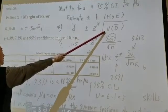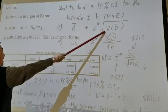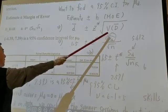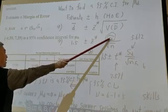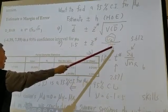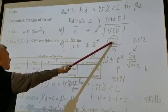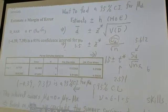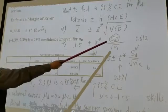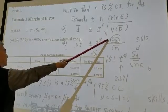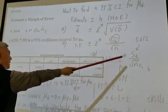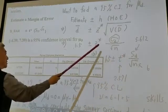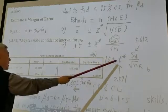Times the square root of the variance of our estimator. We use d-bar to estimate μd, so capital D-bar is our estimator. We know the variance of D-bar is σd squared divided by n. After taking the square root, it becomes σd over square root of n. Since we don't know σd, we replace it with the sample standard deviation sd. The resulting statistic is no longer z — it becomes t.